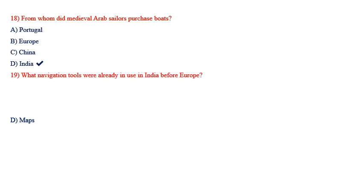From whom did medieval Arab sailors purchase boats? Options: Portugal, Europe, China, and India. The answer is India. What navigation tools were already in use in India before Europe? Options: compass, binoculars, telescopes, and maps. The answer is compass.